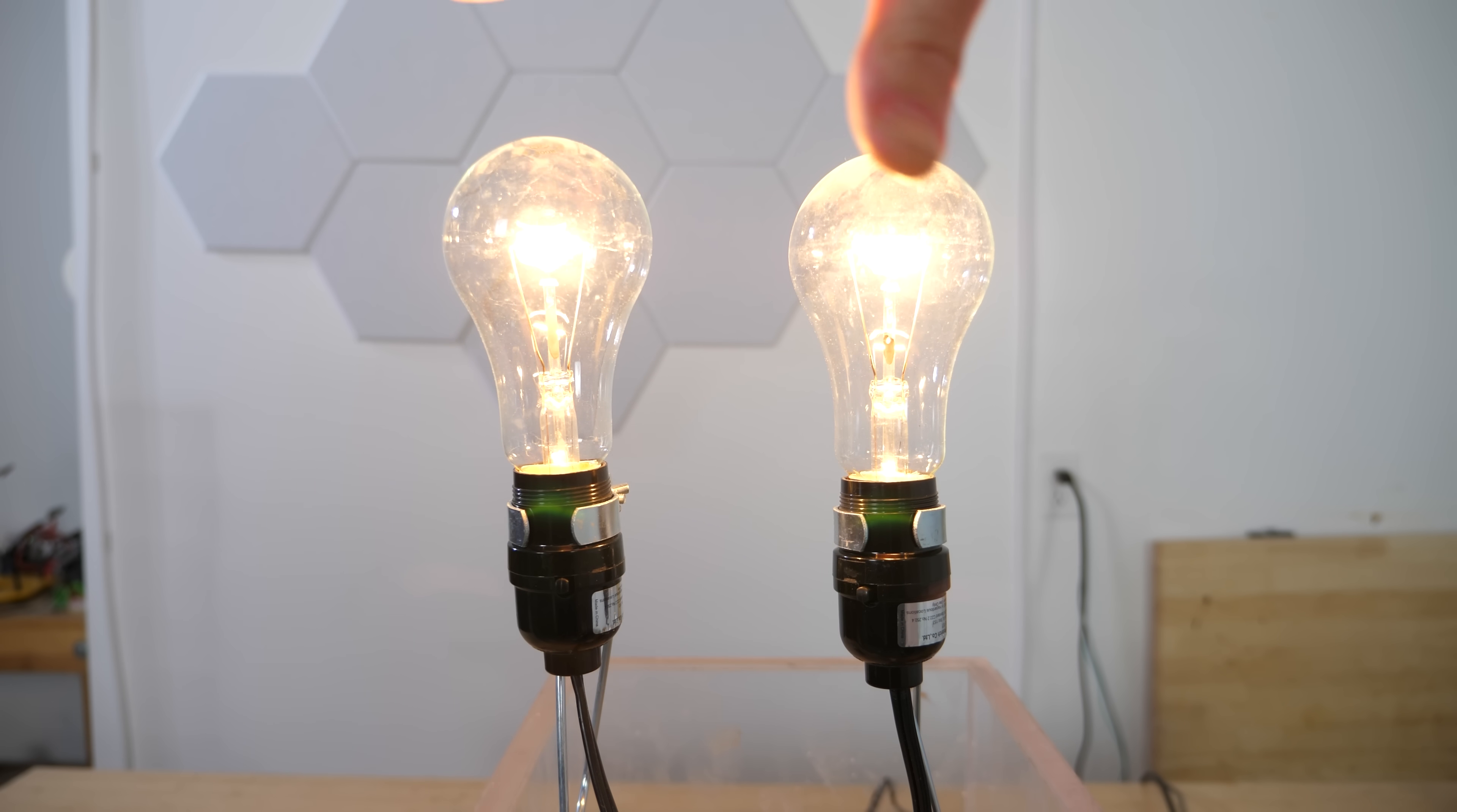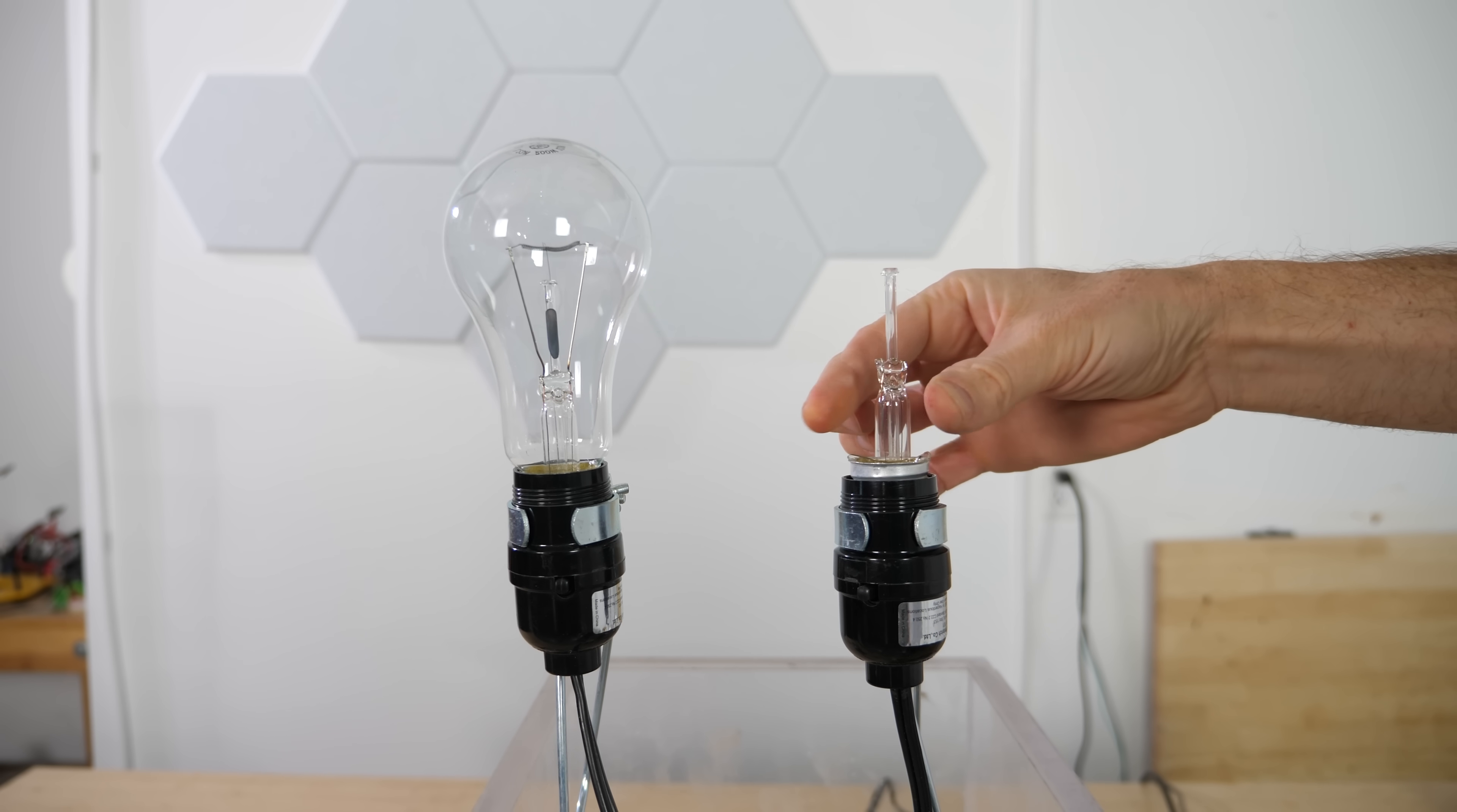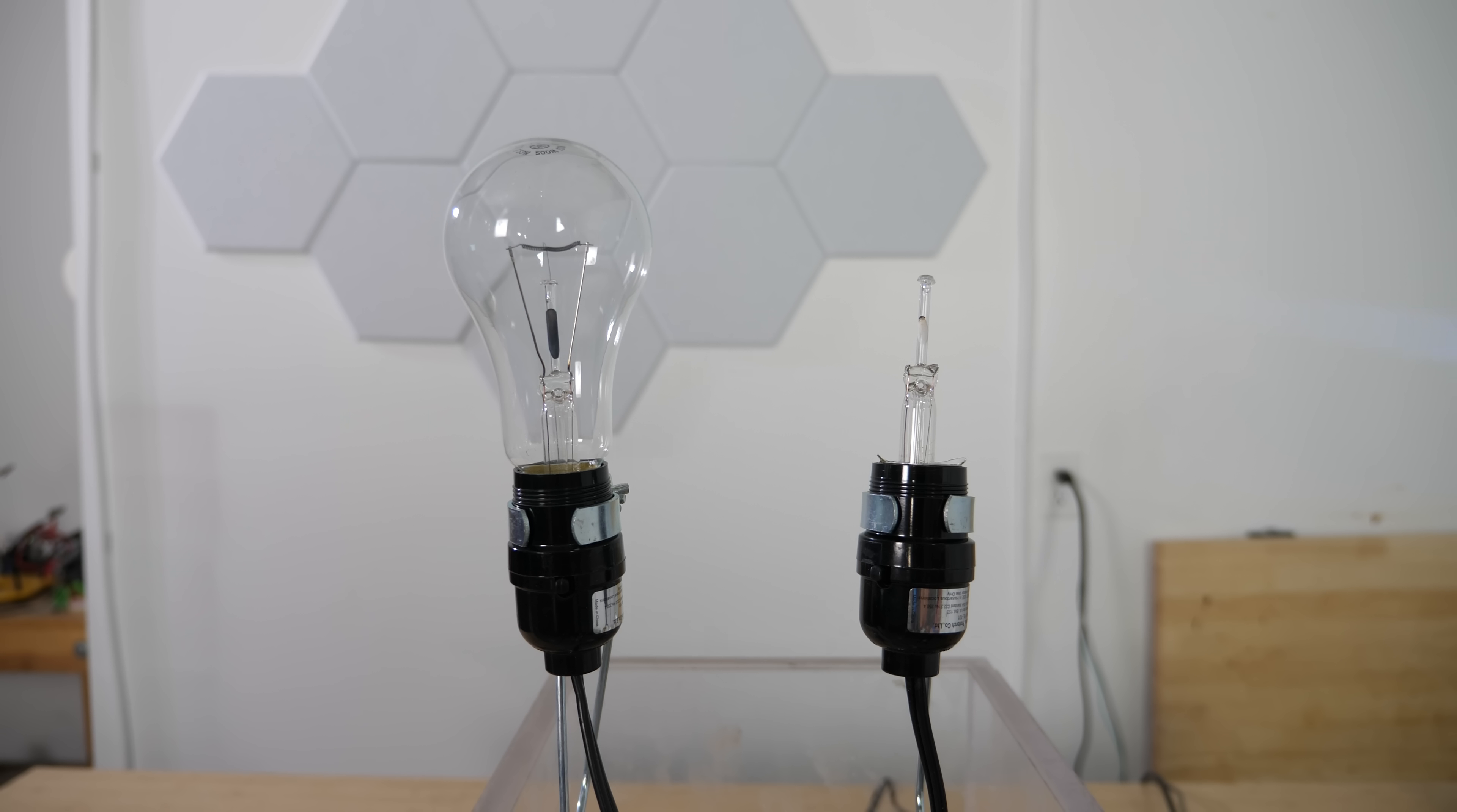Now normally glass is a very good insulator, but watch what happens when we heat up the glass. So you can see right now they're both on, and I'm gonna take out this light bulb so the other one turns off and I'm gonna replace it with this. So right now they're still both off because the circuit isn't completed because these wires aren't connected. But now watch what happens when we heat up this glass.